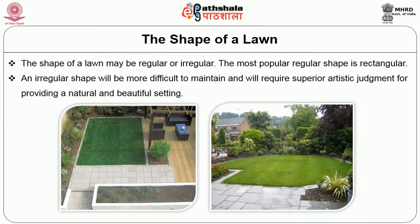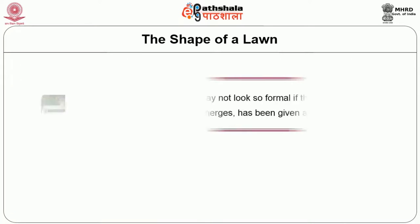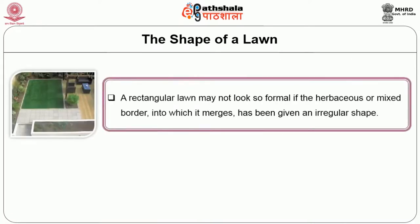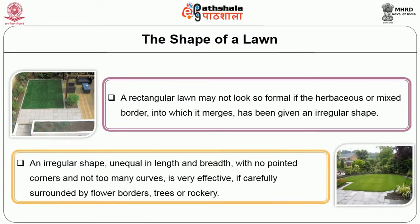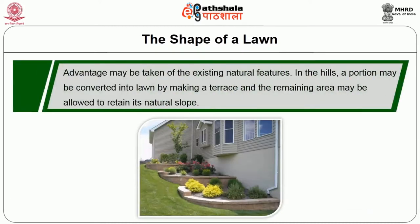An irregular shape will be more difficult to maintain and it will require superior artistic judgment for providing a natural and beautiful setting. A rectangular lawn may not look so formal if the herbaceous or mixed border into which it merges has been given an irregular shape. An irregular shape, unequal in length and breadth with no pointed corners and not too many curves, is very effective if carefully surrounded by flowering borders, trees or rockery. Advantages may be taken of existing natural features. In the hills, a portion may be converted into lawn by making a terrace and the remaining area may be allowed to retain its natural slope.